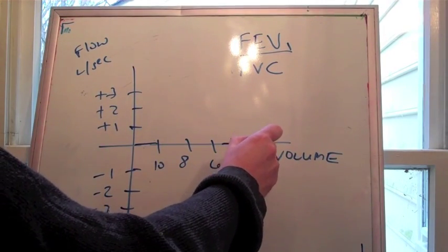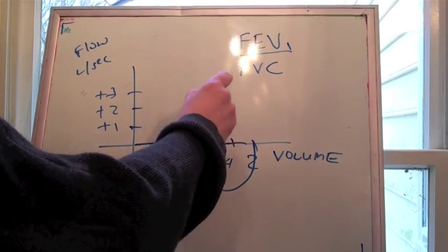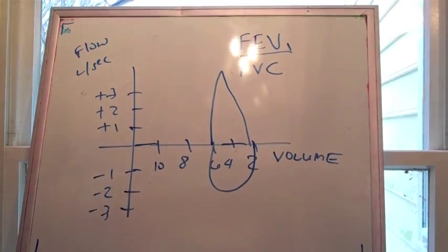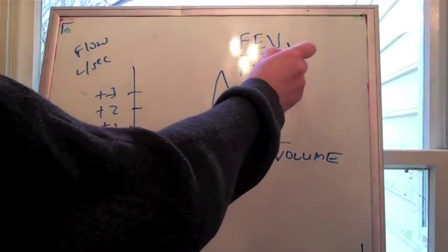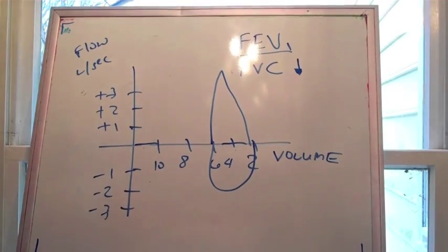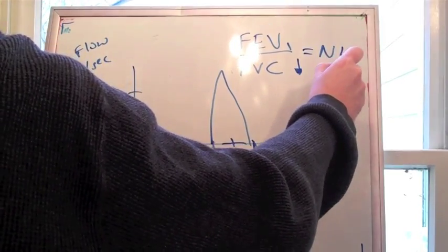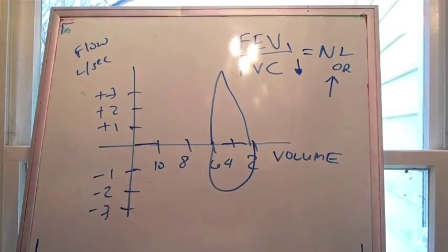Now, how about restriction? For restriction, your volume is lower, or at least the machine, as you blow, senses it as being lower. And then the amount of air you get out, the flow rates are normal to high, because compliance is low. So a low FVC should make you suspicious for restriction. The ratio itself will be normal or high.